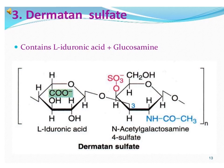Dermatan sulfate contains L-iduronic acid and galactosamine. L-iduronic acid reacts with N-acetylgalactosamine 4-sulfate to produce dermatan sulfate, as seen in the structure.